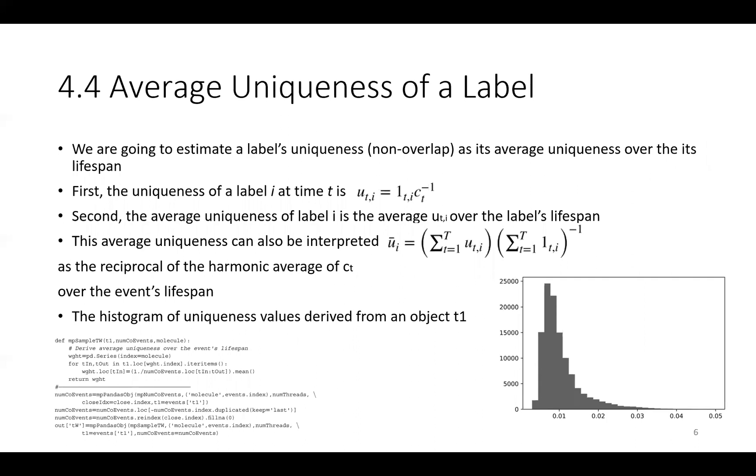Let's move to the average uniqueness of the label. We are going to estimate the label's uniqueness non-overlap as its average uniqueness over its lifespan. First, the uniqueness of the label i at time t is u_{t,i} equals to one over c_{t,i}. Second, the average uniqueness of label i is the average u_{t,i} over the label lifespan.